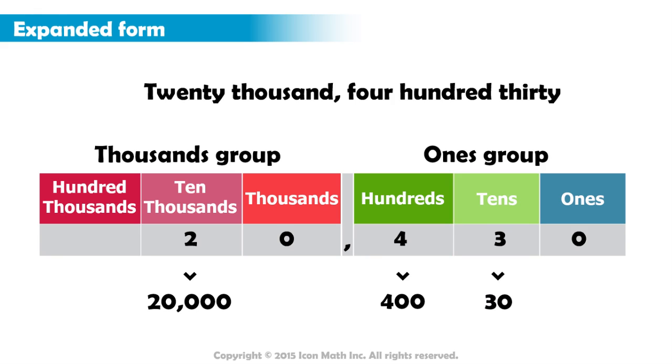So, to express 20,430 in expanded form, or to expand it, we write 20,000 plus 400 plus 30. Note that if we add up these values, we get 20,430, the number we started with.